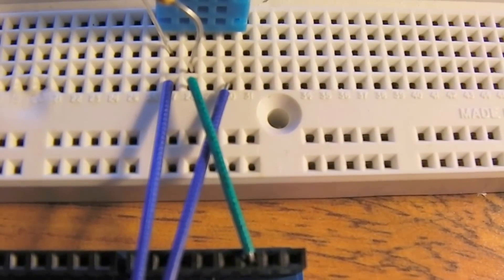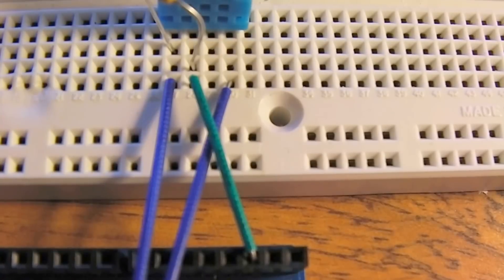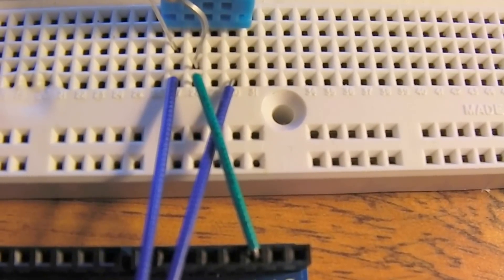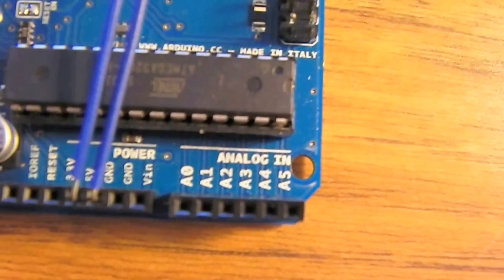And then your third pin you actually don't do anything for. You just leave that alone. And then your fourth pin you connect up to ground on the Arduino.